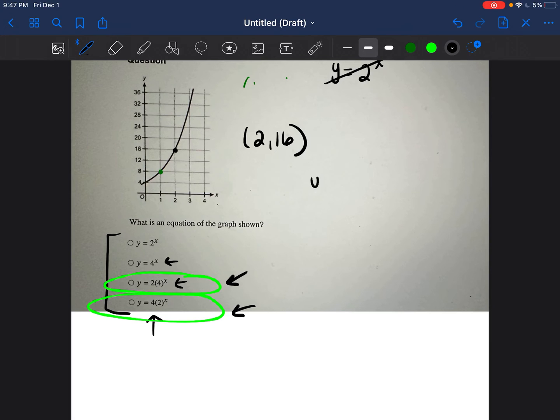So now that we know that it's either this equation or this equation, we only have to test these two out. So we're going to do y is equal to 2(4^x). And then we're going to also test y is equal to 4(2^x). OK...